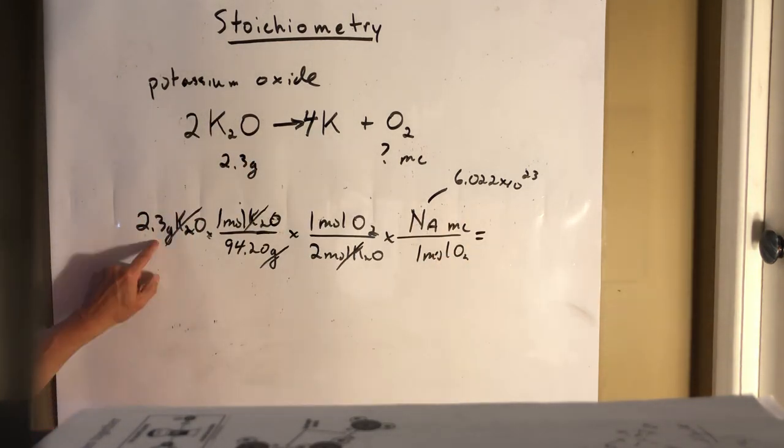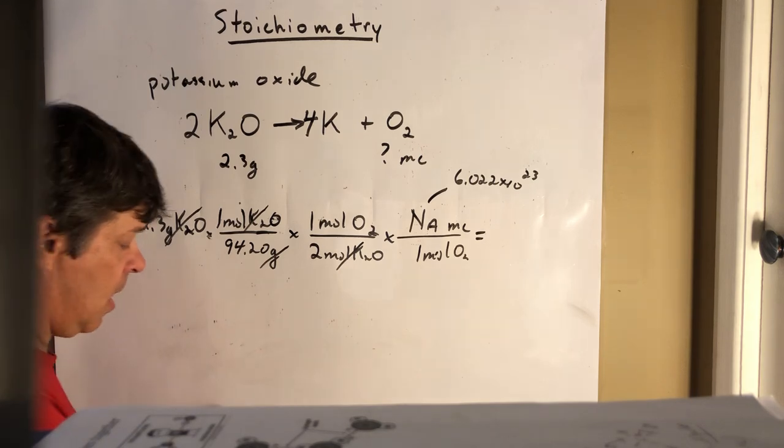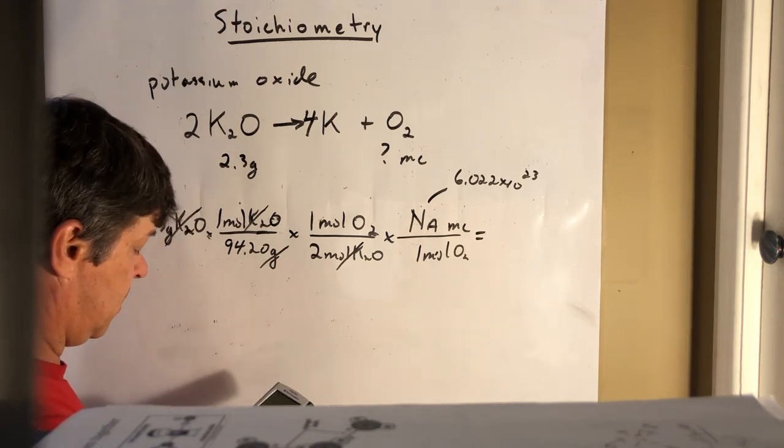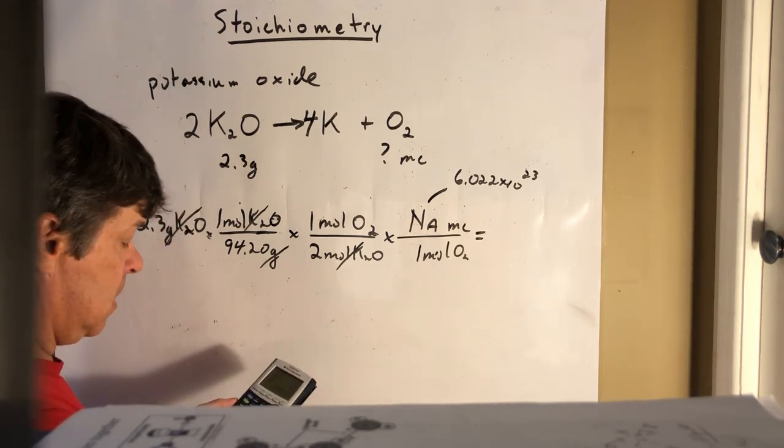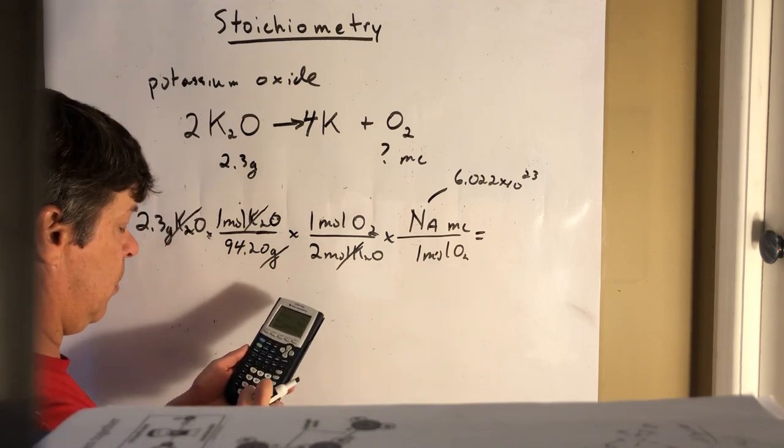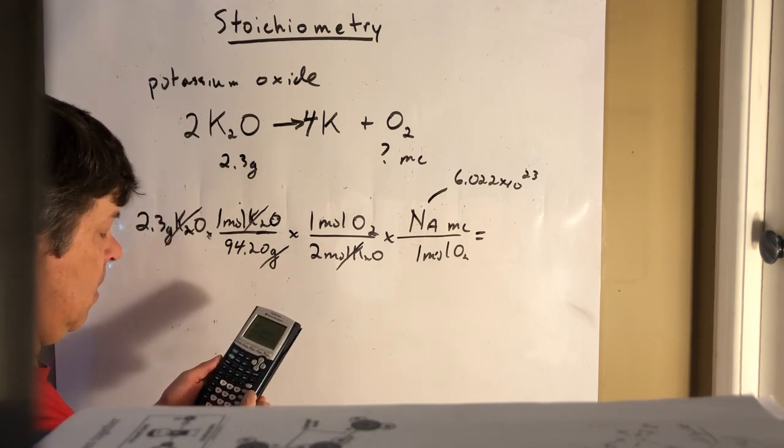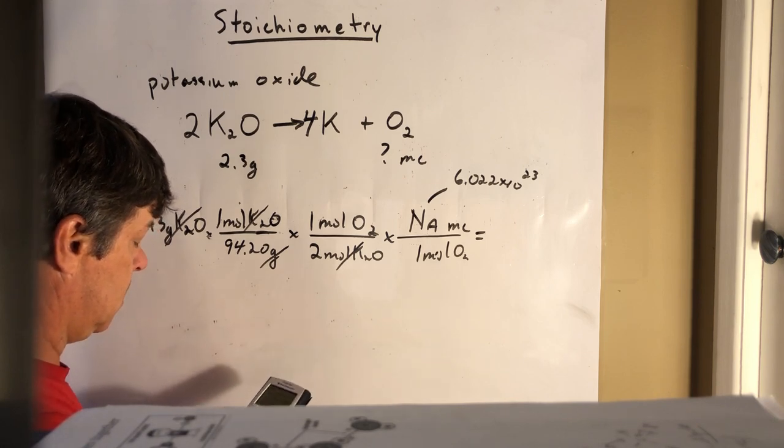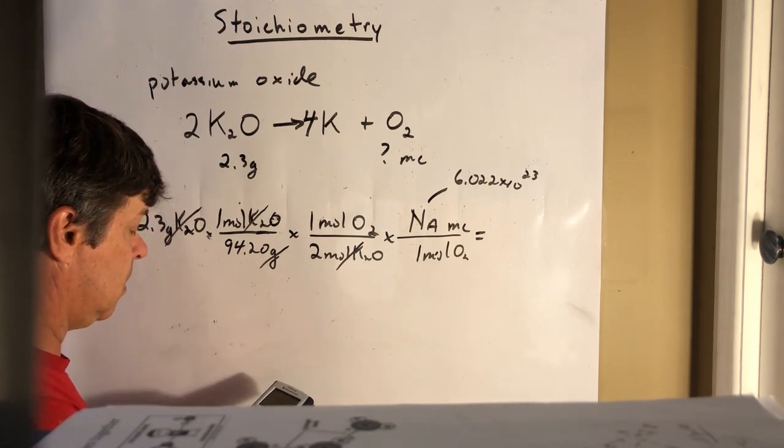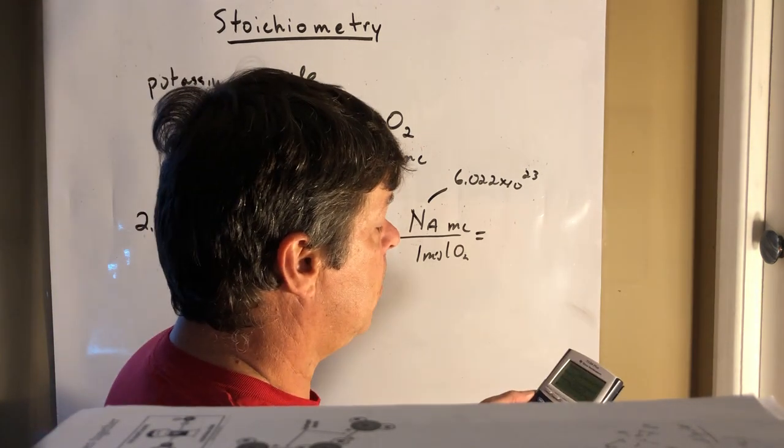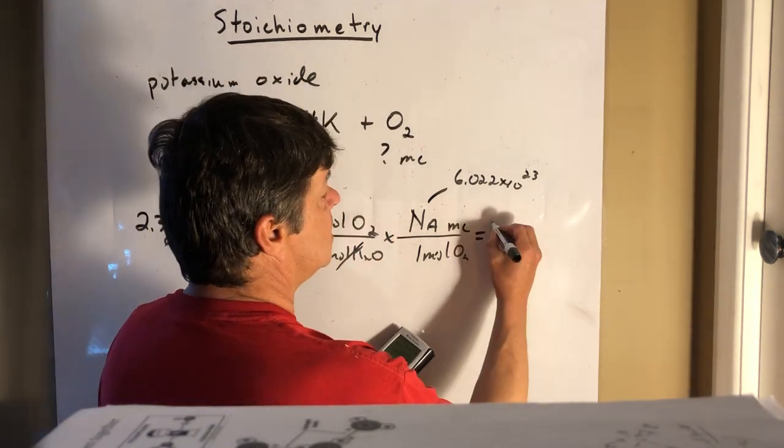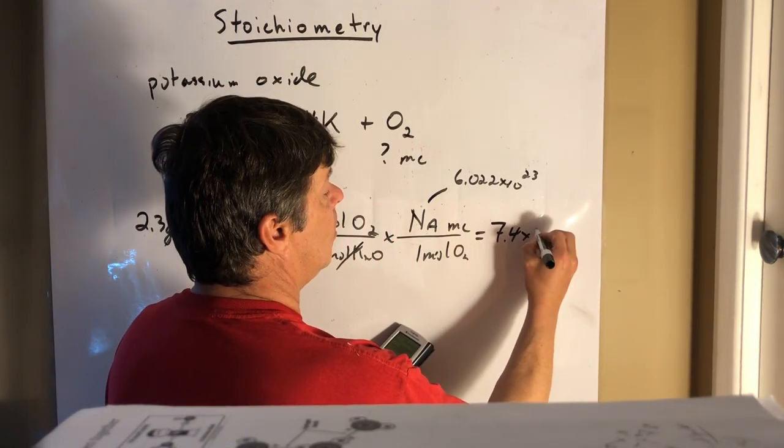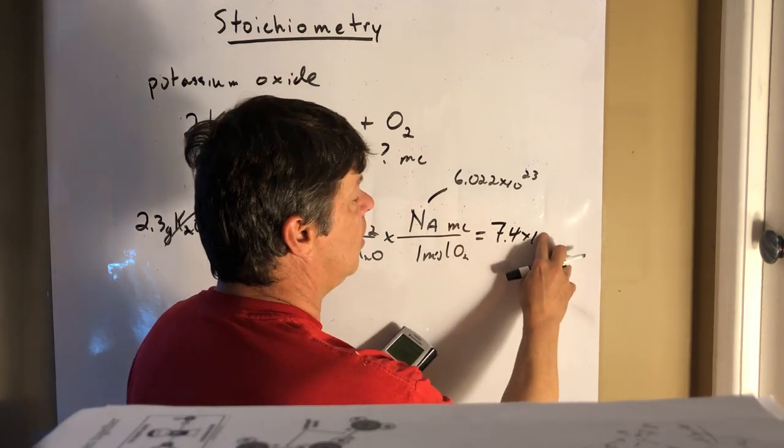And then we'll just need to multiply. Make sure we use two sig figs. So let me just hit a couple buttons here. We're going to multiply that by 2.3 and divide that by 2, multiply by 6.022 times 10 to the 23rd, and we have 7.4 times 10 to the 21st molecules.